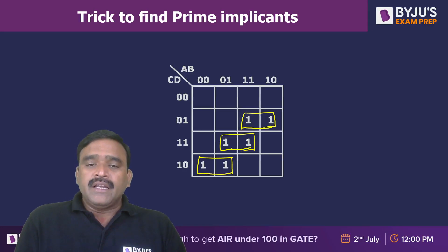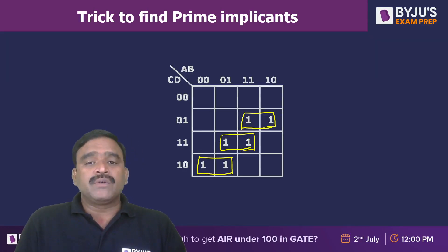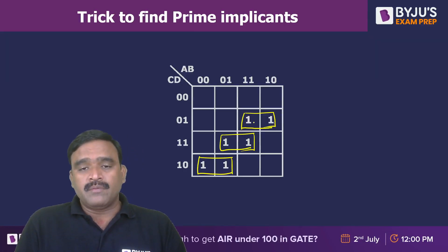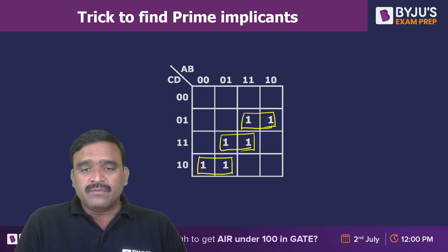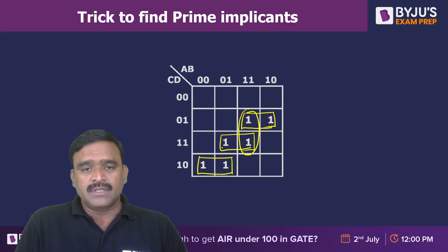In addition to that, some more implicants you can have — those are prime implicants. These two are adjacent ones and both ones are present in different pairs, not in the same pair. So that's why we can map all possible adjacent ones. These two are also adjacent.